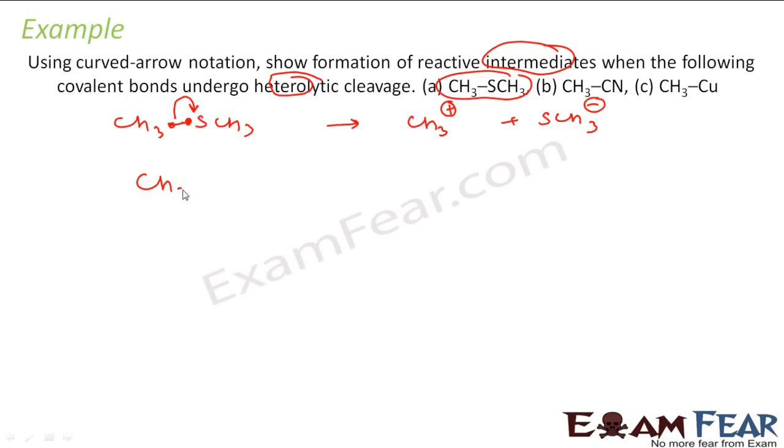Let us take CH3-CN. Again CH3-CN, CN is more negative. So CN will try to get both electrons. Both the electrons are taken by CN. So this becomes CH3+ and CN-. Correct?